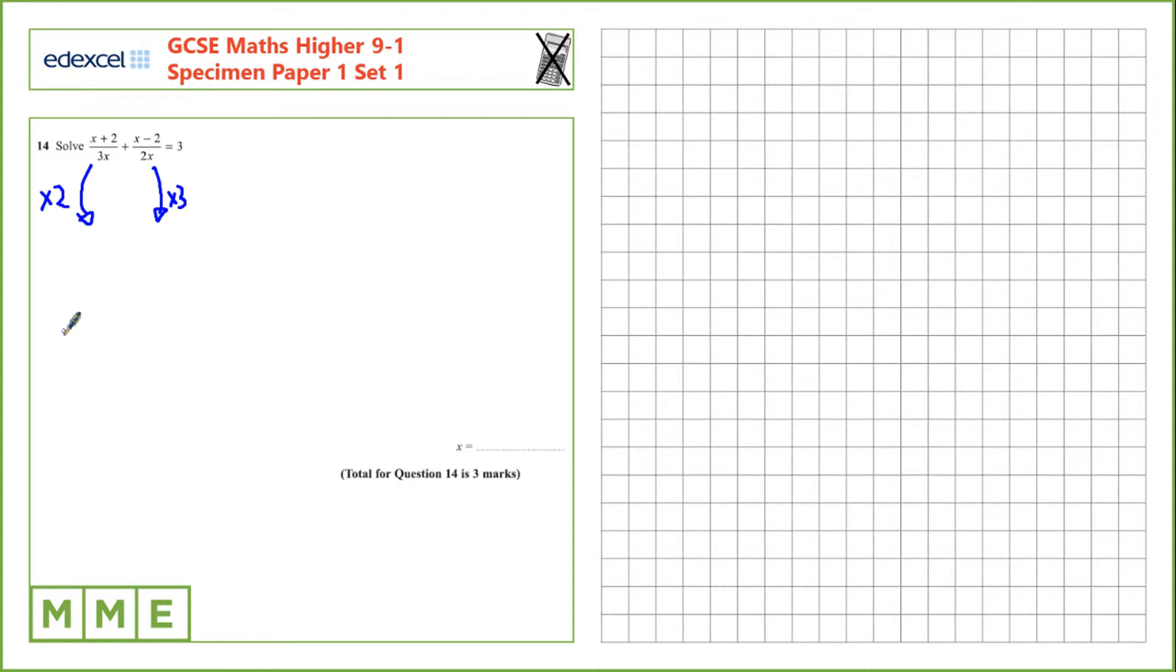On this side, if I multiply the top and bottom by 2, I'll have 2 times x plus 2, all over 6x. And for this fraction, I'm multiplying the top and bottom by 3, I'll have 3 times x minus 2, also all over 6x. That equals 3.